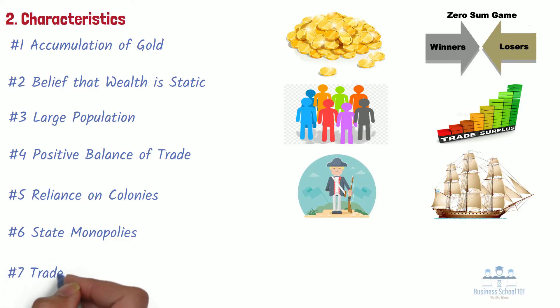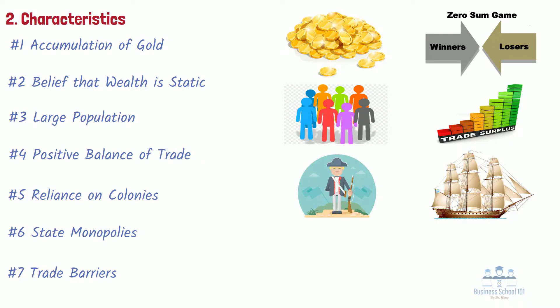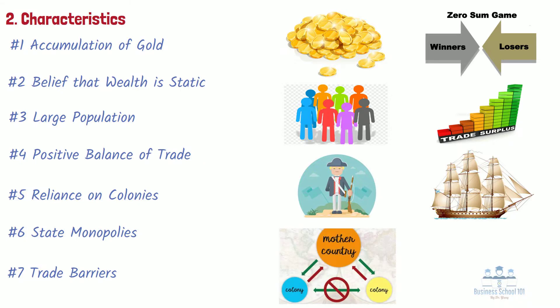Number 7: Trade barriers. Many empires enforced a ban on trade between their colonists, as well as that of other empires. For instance, when Britain had control over India, it was banned from trading with other colonies such as Australia or Canada. At the same time, many nations imposed tariffs to make imports more expensive and uncompetitive.